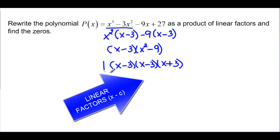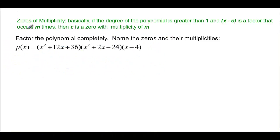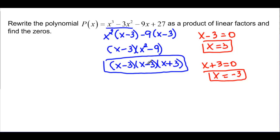So we found the linear factors and now we just have to find the zeros. We have x minus 3. We actually have that more than once so x would be equal to 3. And then we have the x plus 3 and that will give us x equal negative 3. So we had this zeros of multiplicity, that's basically if you have a degree of polynomial that's greater than 1 and you've got these linear factors that occur more than once like in the previous problem. Here we had x minus 3 that happened twice. So that's what we're talking about.